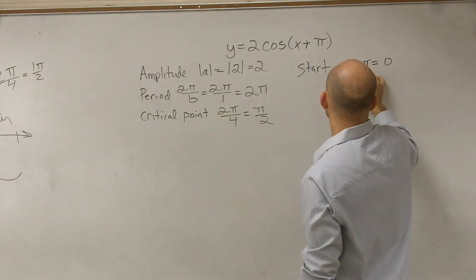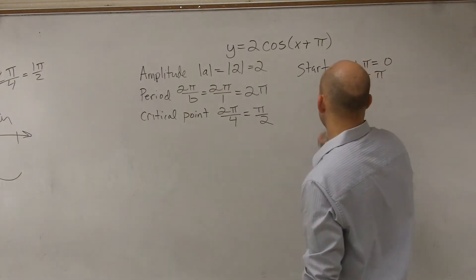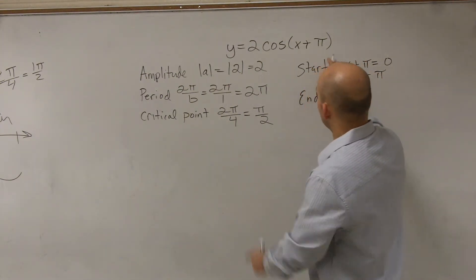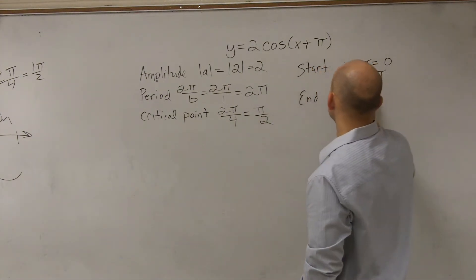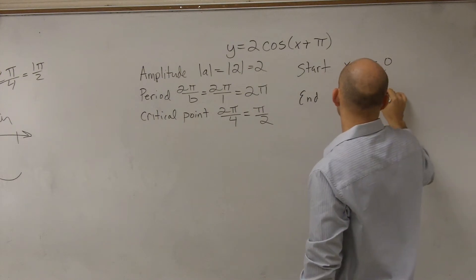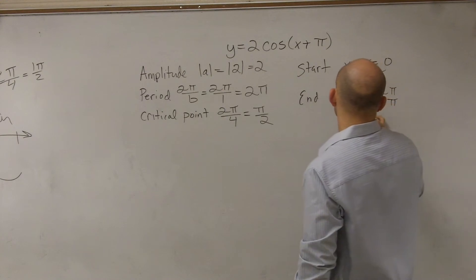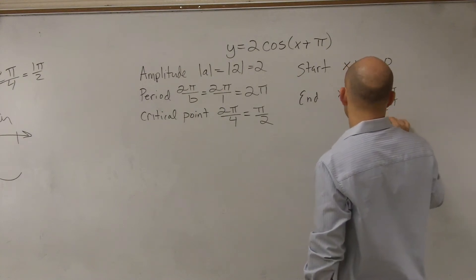So therefore, x equals negative π, and then the end, you take what's inside your function and you set it equal to 2π. So therefore, my graph ends at π.